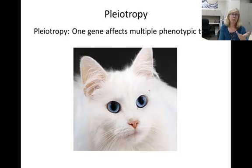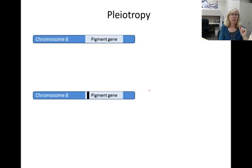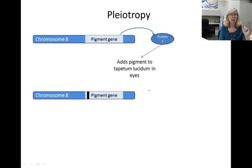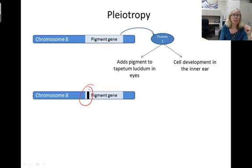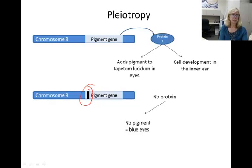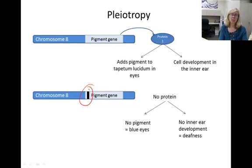Next, let's talk about pleiotropy. In pleiotropy, a gene has multiple phenotypic effects. For instance, many cats are born with both blue eyes and deafness, and this is due to a single mutation. On chromosome 8 in cats, a gene codes for a protein that turns on the development of cells in the eye where pigment is added to a cell layer called the tapetum lucidum. The same protein activates the development of cells in the inner ear. If there's a mutation in the pigment gene that prevents the protein from being made, there will be no pigment added to the cell layer in the eye, so the cat's eyes are a low-pigment blue, and also the inner ear does not develop correctly so the cat will be deaf. This gene therefore has pleiotropic, or multiple, effects on phenotypes.